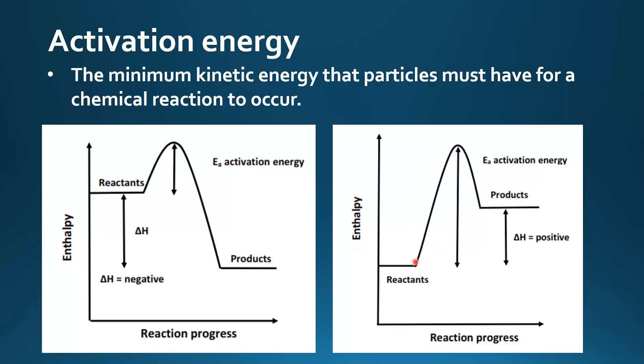On the right we have an enthalpy level diagram for an endothermic reaction. The products are at a higher enthalpy than the reactants. Delta H is positive, so it's an endothermic reaction. Here we can see the activation energy for this endothermic reaction. Again, it's the energy barrier that must be overcome before the reaction can occur.